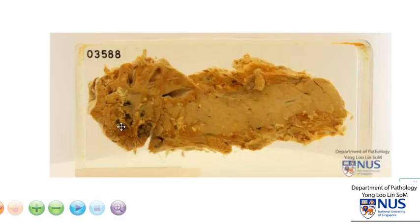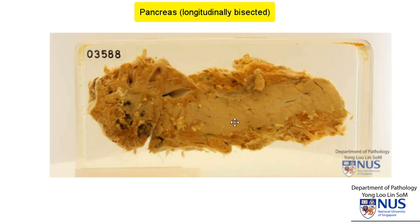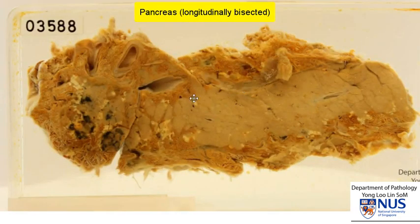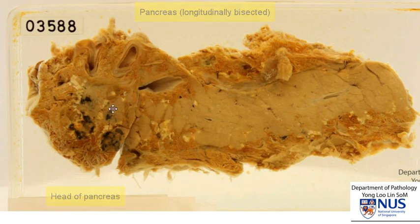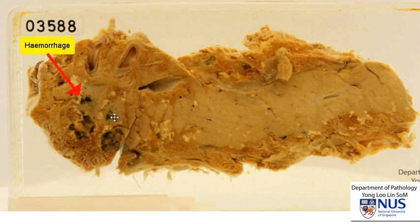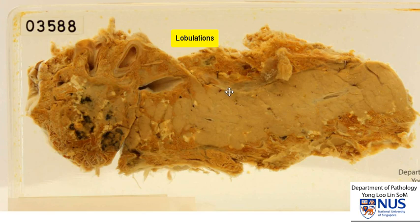Here is an example of a pancreas that has been bisected longitudinally. We are looking at the cut surface, and this is probably the region of the pancreatic head. There are some darkish areas here which are likely to represent hemorrhage. We can still make out the vague lobulations of the pancreatic parenchyma, and this is part of the normal architecture where you have lobules that contain the exocrine elements, and also some endocrine elements within the lobules.